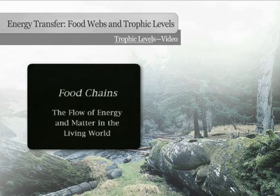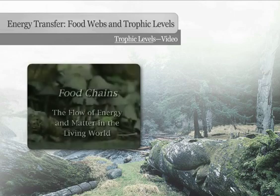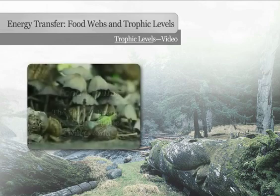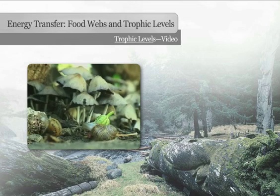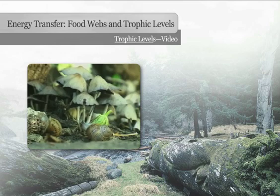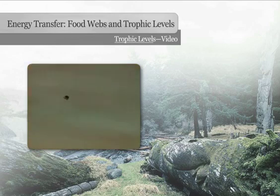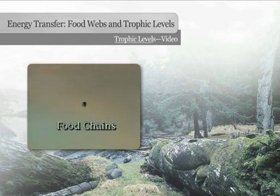Most species of living things, including all animals, are unable to carry out photosynthesis to make their own food. This means they must eat in order to obtain the energy they need. Living things feed on one another, and as a result, in the living world, energy and matter are passed along through what are called food chains of organisms.